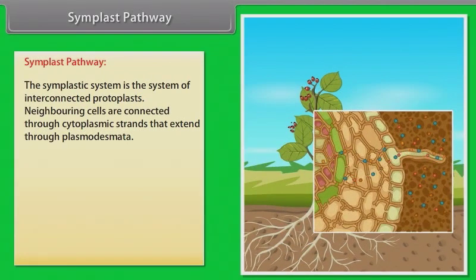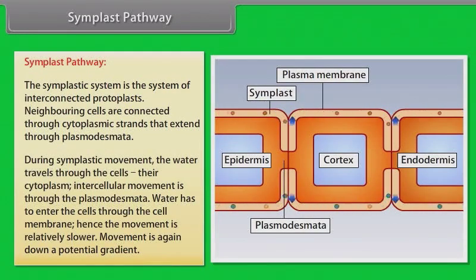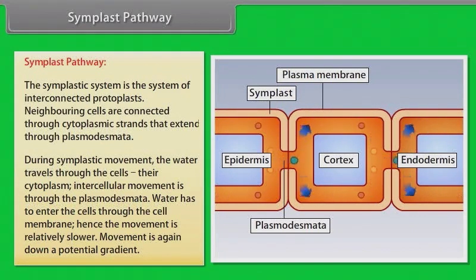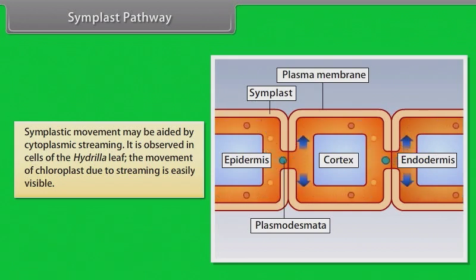Symplast pathway. The symplastic system is the system of interconnected protoplasts. Neighboring cells are connected through cytoplasmic strands that extend through plasmodesmata. During symplastic movement, the water travels through the cells and their cytoplasm. Intercellular movement is through the plasmodesmata. Water has to enter the cells through the cell membrane, hence the movement is relatively slower. Movement is again down a potential gradient. Symplastic movement may be aided by cytoplasmic streaming, which is observed in cells of the hydrilla leaf, where movement of chloroplasts due to streaming is easily visible.